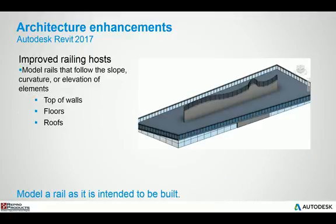The second improvement introduced is creating railings that are a bit more intelligent. They have a better understanding of what the object host is and will conform to the shape of that object.